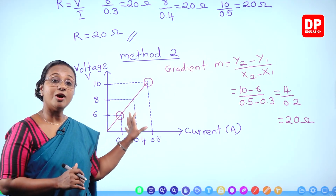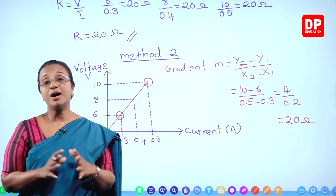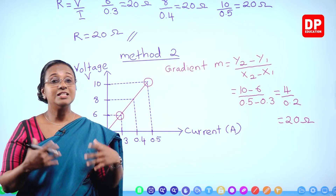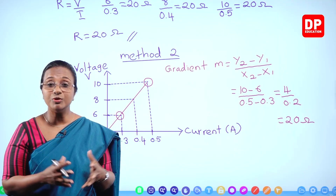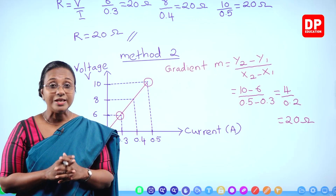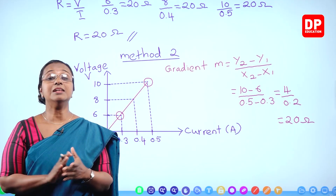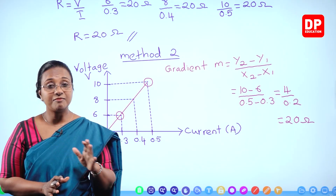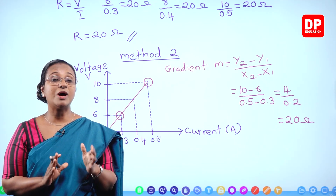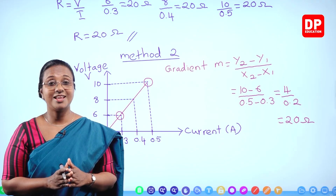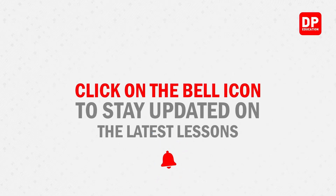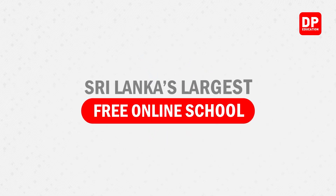With that, students, you now have a good understanding of this lesson and can answer different types of questions. Although we discussed Ohm's law throughout, the same activity can be presented in different circuit arrangements — as long as you understand the basic concept, you can answer any type of question. That brings us to the end of this chapter on current electricity. DP Education — Sri Lanka's largest free online school.